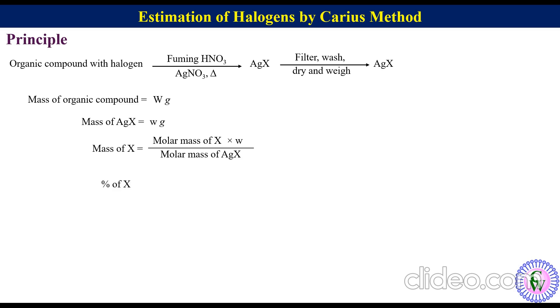Percentage of halogen is equal to mass of halogen upon mass of sample times 100. So percentage of halogen will be equal to molar mass of halogen times small w times 100 upon molar mass of silver halide times capital W.